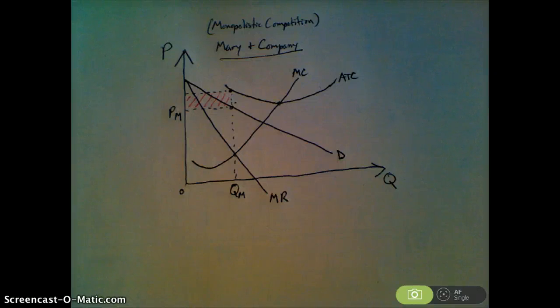In the long run, monopolistic competition firms, or monopolistically competitive firms, I should say, do not earn economic profits. In the long run, they earn zero economic profit, a normal profit, or break even. All things mean really the same.